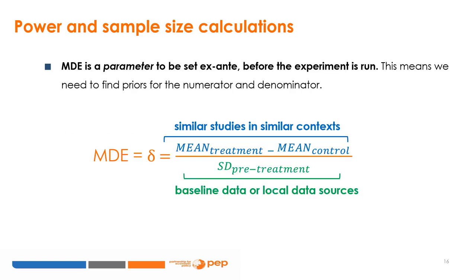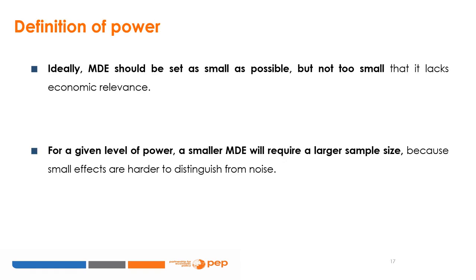The MDE is a parameter that must be set ex-ante before the experiment is run, in order to calculate an adequate sample size. This means we need to find priors for the numerator and denominator. The difference between the means must be drawn from similar studies in similar contexts, while the standard deviation must be drawn from baseline data or pre-existing local data sources such as household surveys. Ideally, the MDE should be set as small as possible, but not so small that it lacks economic relevance. For a given level of power, a smaller MDE will require a larger sample size, because small effects are harder to distinguish from noise.